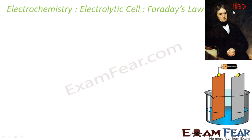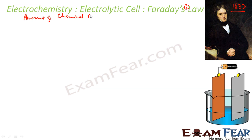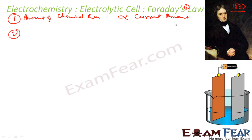He did exhaustive investigation on electrolytic solutions and published his laws in 1833 in the form of Faraday's Two Laws of Electrolysis. The first law states: the amount of chemical reaction that occurs at any electrode during electrolysis by a current is proportional to the electricity passed. If you pass more current, you get more reaction; less current gives less reaction.